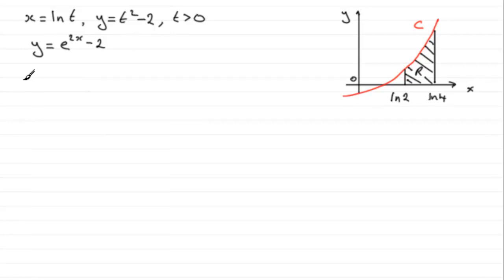So when we're trying to work out the volume of revolution V about the x-axis, it's given by the formula pi times the integral from x1 to x2 which in this case is the natural log of 2 to the natural log of 4 of y squared with respect to x. Now we know what y is, it's e to the 2x minus 2, so all we need to do is just square that.